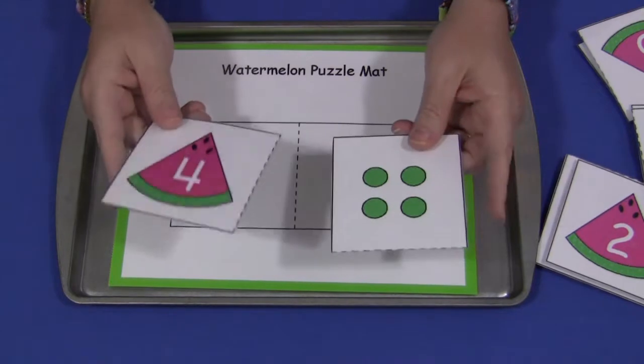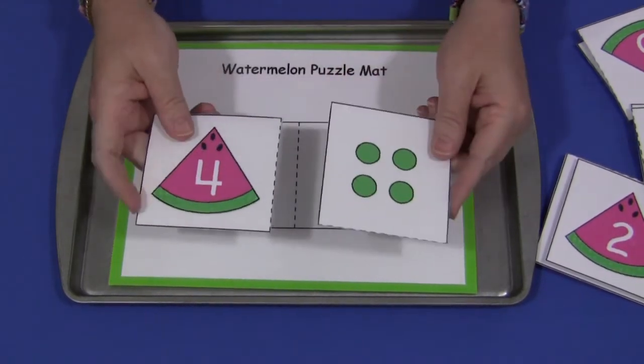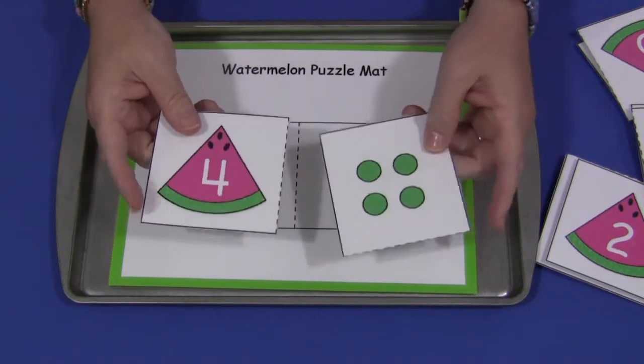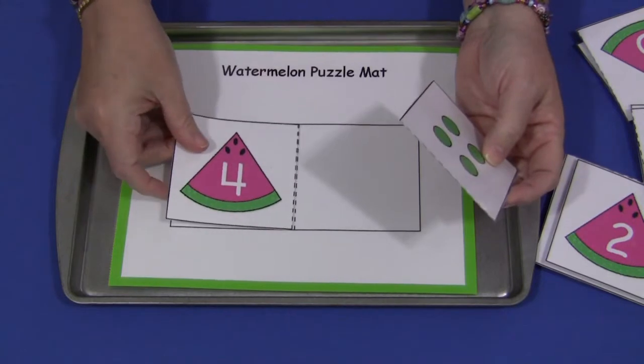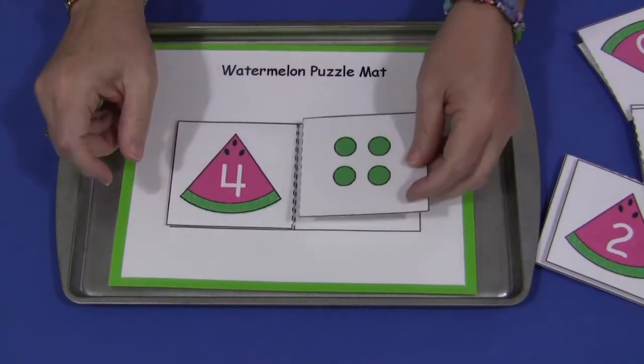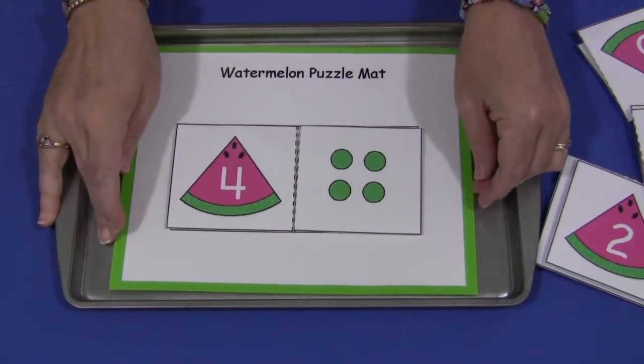And these come with numbers to number dots as well as number to numbers. So you have two choices, 0 through 20 on these. And the children would just put one side down on the puzzle mat and then match the correct number with that on the other side of the mat.